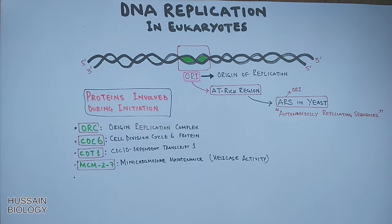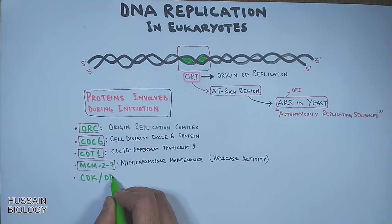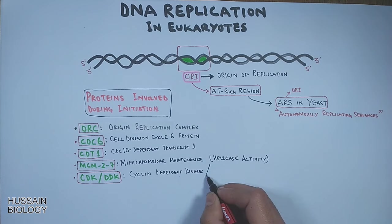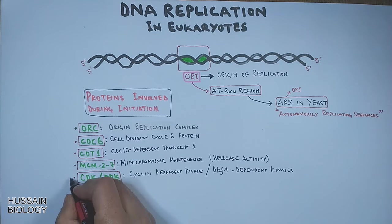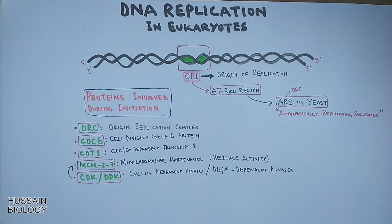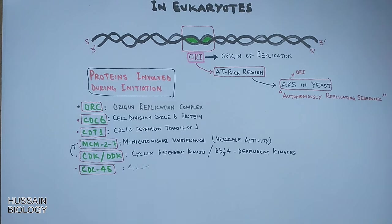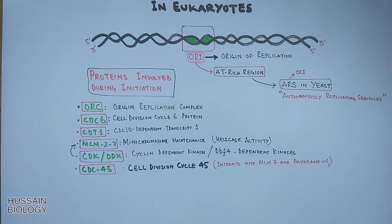Then we have cdk and ddk, both are kinase proteins: cyclin dependent kinases and dbf4 dependent kinase. Both regulate the initiation proteins by phosphorylation. Then we have cdc45 protein, cell division cycle 45 protein. It interacts with mcm7 and polymerase alpha. The cdc45 activates the helicase activity of mcm proteins.